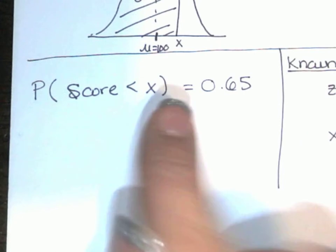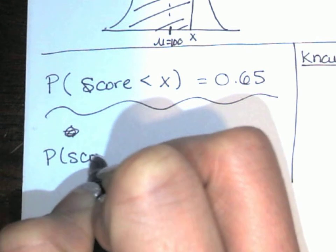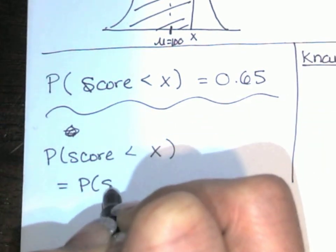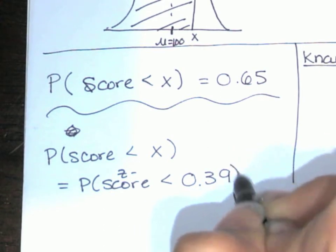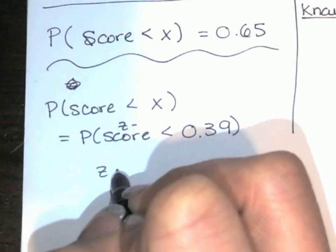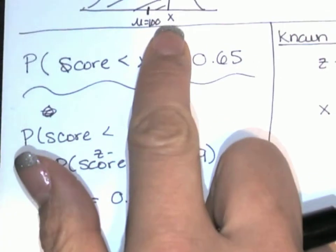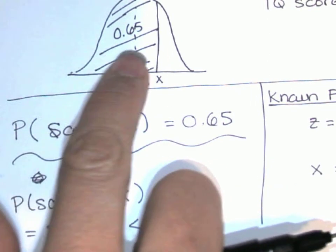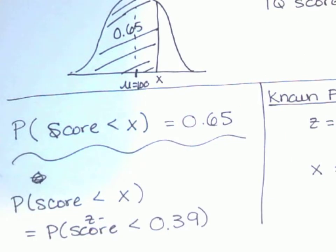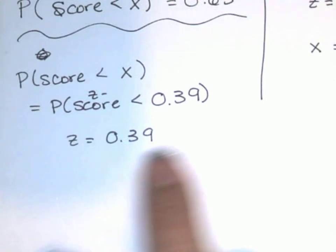So the probability that a score is less than x turns out to be equal to the probability that the corresponding z score is less than 0.39. So the z score that goes with the 65% is 0.39. So now I have to find the x value that goes with this z score. This is telling us that this particular IQ score that separates the lower 65% from that upper 35% is 0.39 standard deviations above the mean. So to find out what the actual IQ score is, I need to substitute this z value into the formula over here.